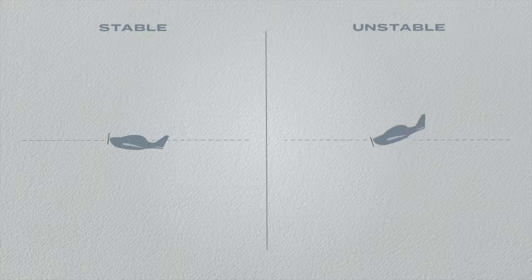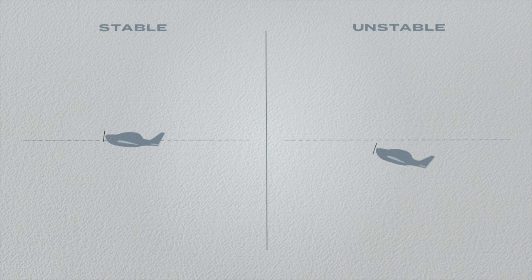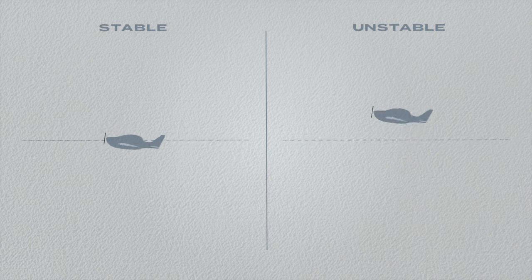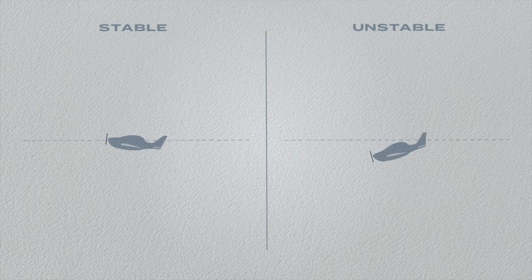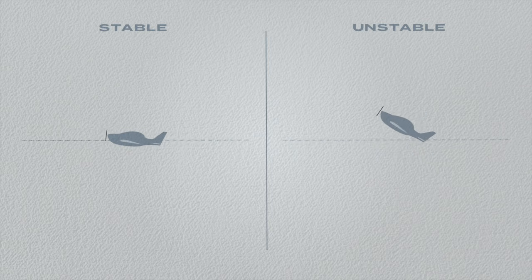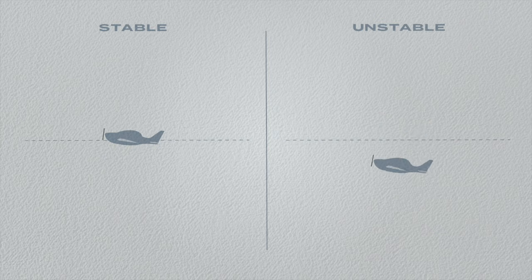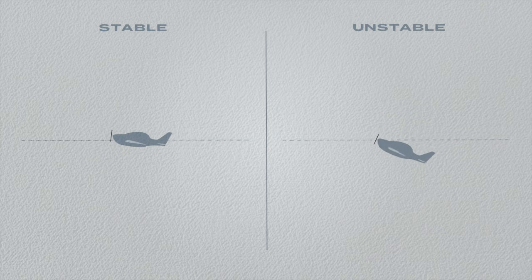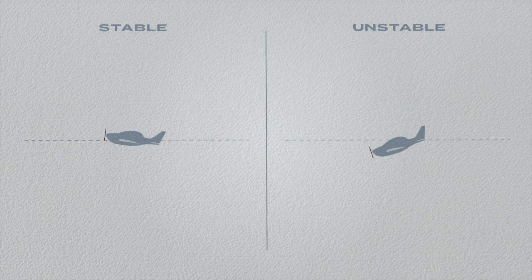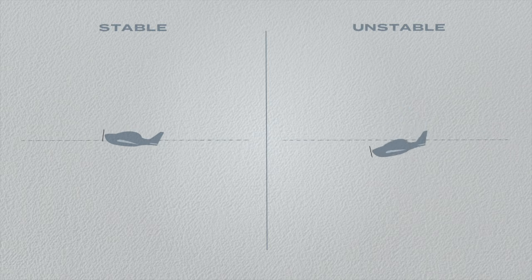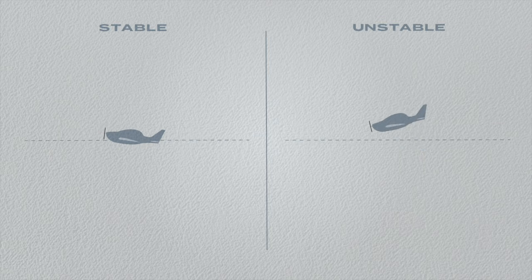A stable aeroplane is easier for the pilot to control. An unstable aeroplane moves further away from its intended attitude when disturbed by turbulence. In this video you will learn about the different types of stability. We'll use longitudinal stability as an example — it relates to the pitching plane, but these terms apply to other axes as well.